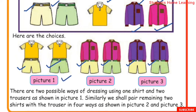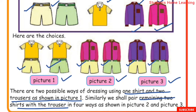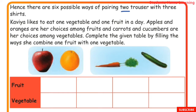Picture 1: One shirt and 2 trousers can be worn in 2 ways. Picture 2: The remaining 2 shirts with the trousers give 4 ways to wear. So with 2 trousers and 3 shirts, there are 6 ways to wear in total.